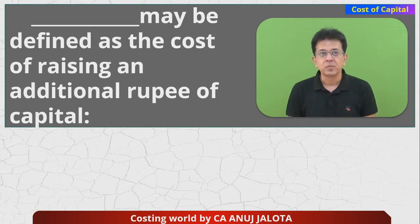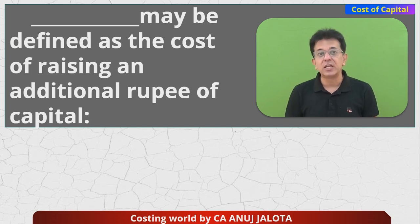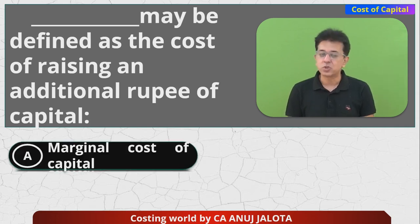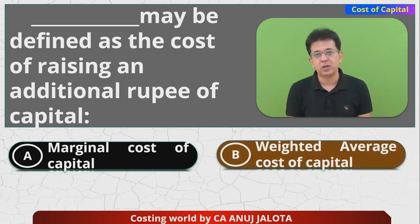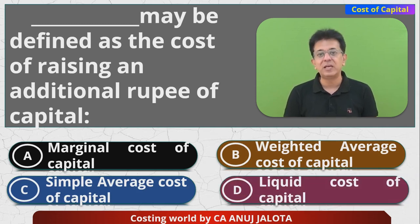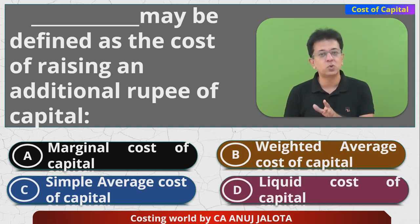So, dash may be defined as cost of raising an additional rupee of capital. The four options are: A) Marginal cost of capital, B) Weighted average cost of capital, C) Simple average cost of capital, D) Liquid cost of capital. This is too easy — comment in the section below.